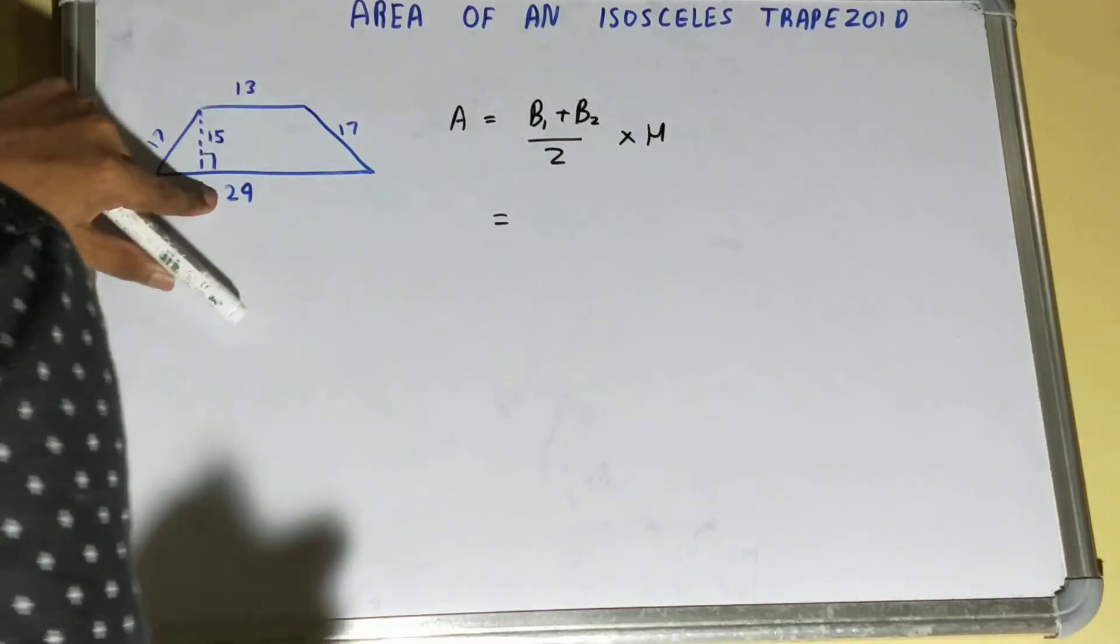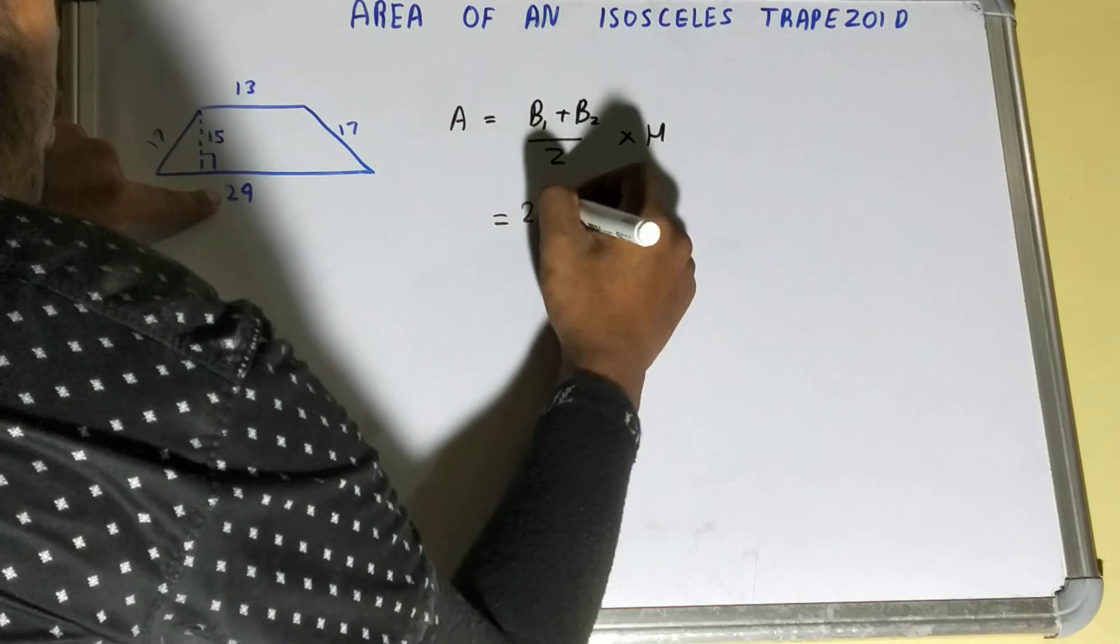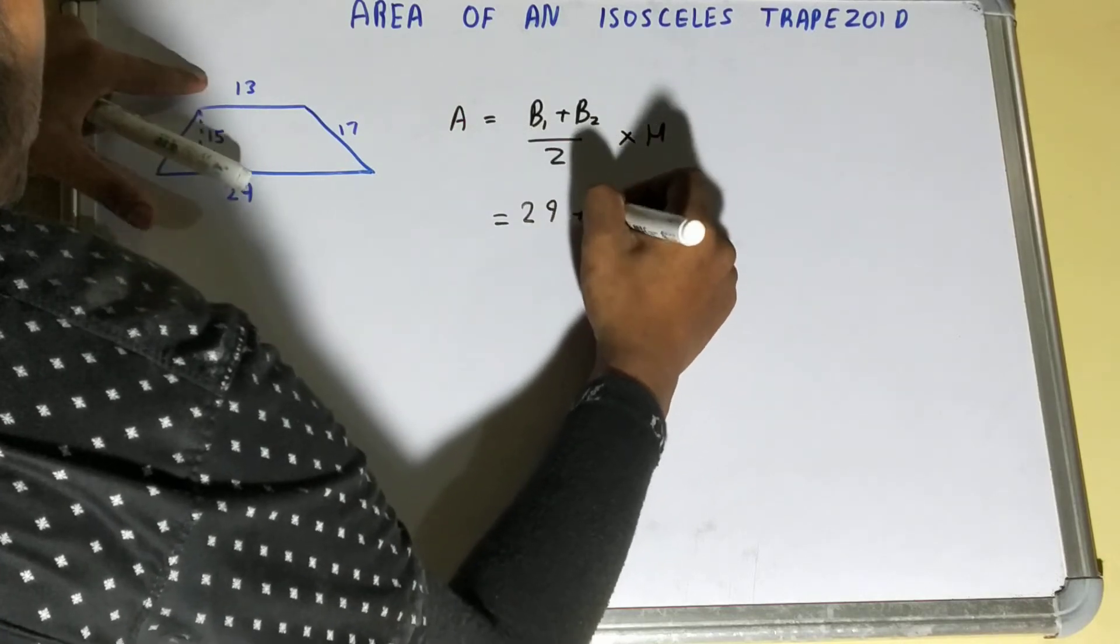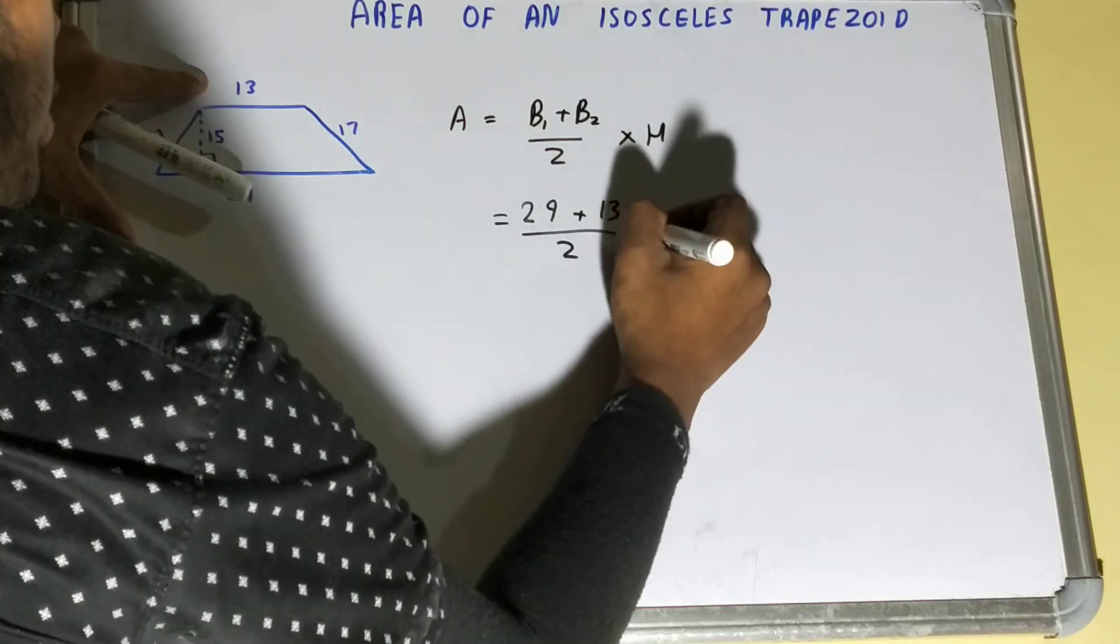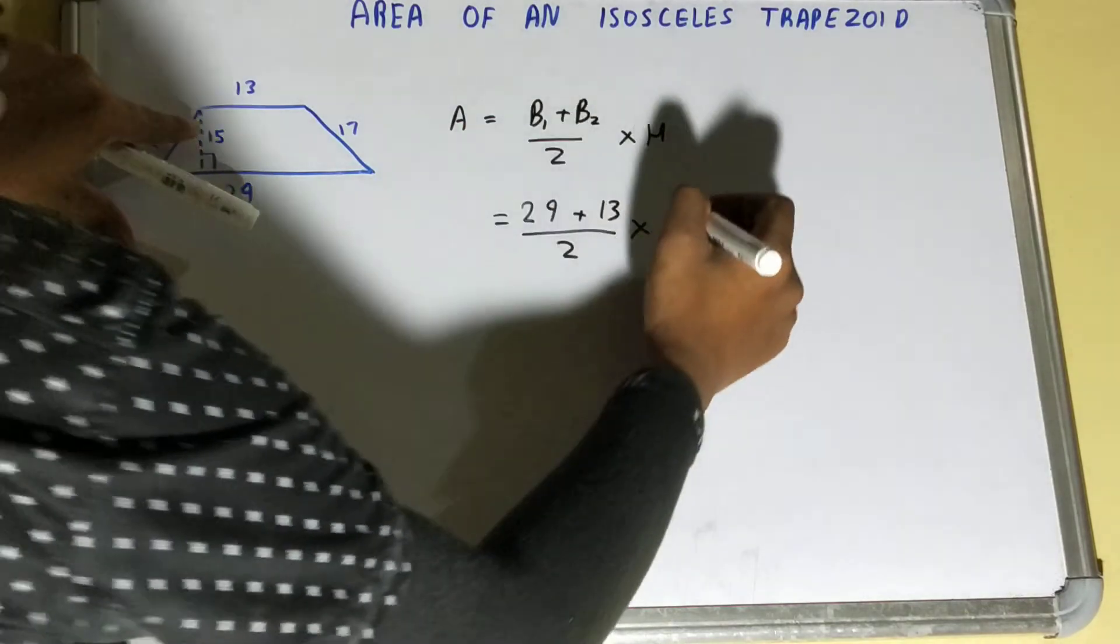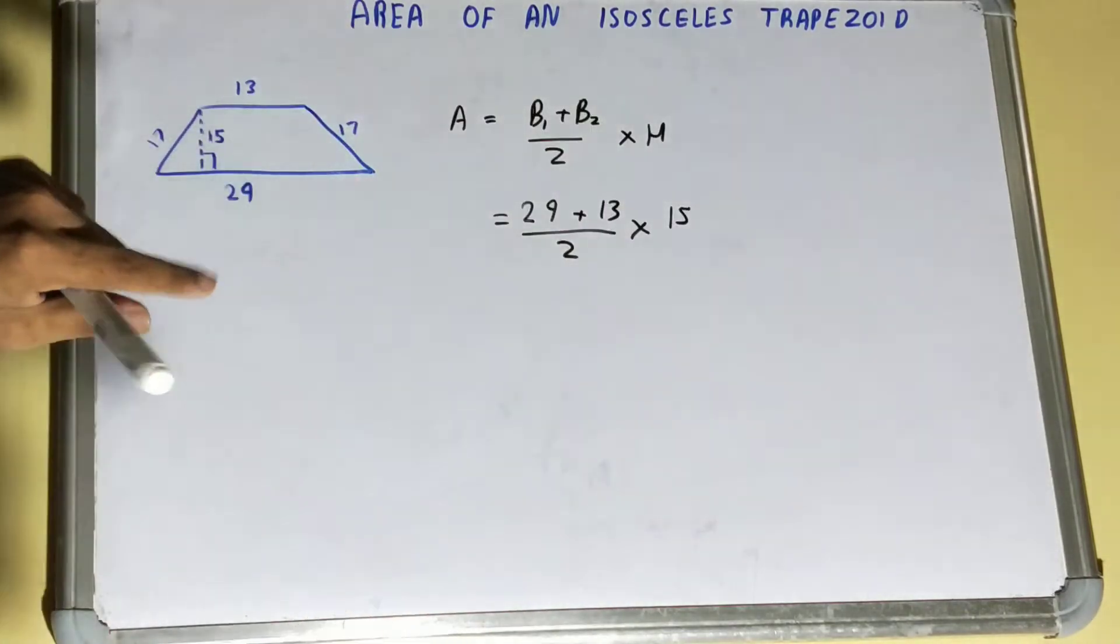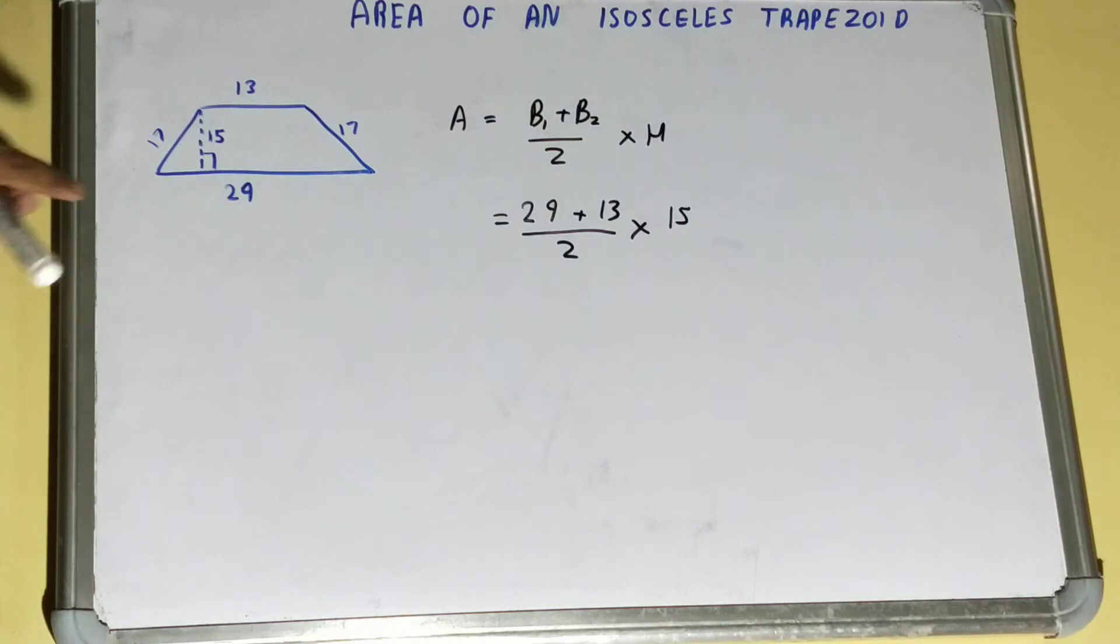So here the bigger one is 29, smaller one is 13, divided by 2, and your height is 15.